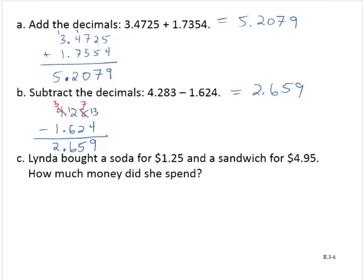Linda bought a soda for $1.25 and a sandwich for $4.95. How much money did she spend? Well, the operation would be addition. And so we'd have 1.25, add 4.95.